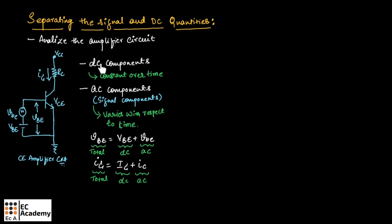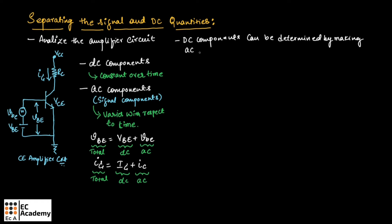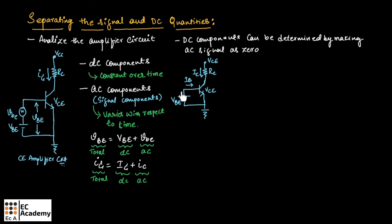We can determine the DC components by making the AC components equal to zero in an amplifier circuit. So this is the common emitter amplifier circuit where we have eliminated all the AC signals, which means we have made AC signal as zero. As you can see in this diagram, the AC signal VBE is eliminated or made as zero to obtain the DC circuit. By considering the DC components and eliminating the AC signals, we will get to know all the DC components and signals present in the circuit.